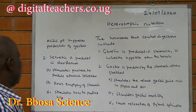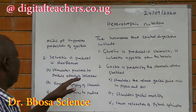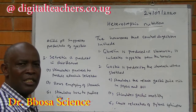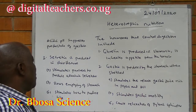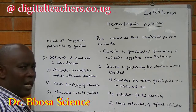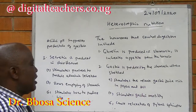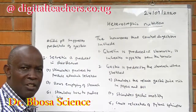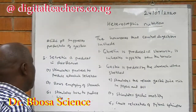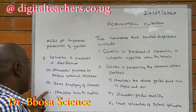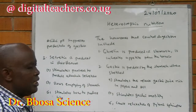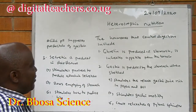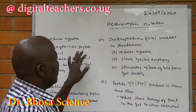Secretin is produced in the duodenum. It stimulates the pancreas to produce alkaline secretion, slows gastric emptying, and stimulates production of bile.